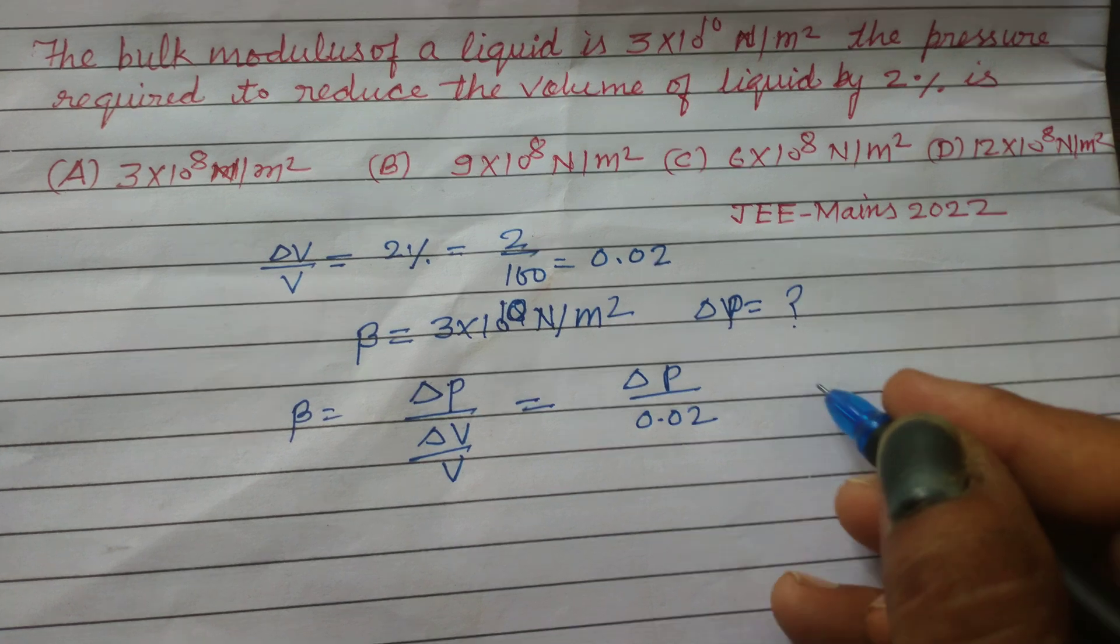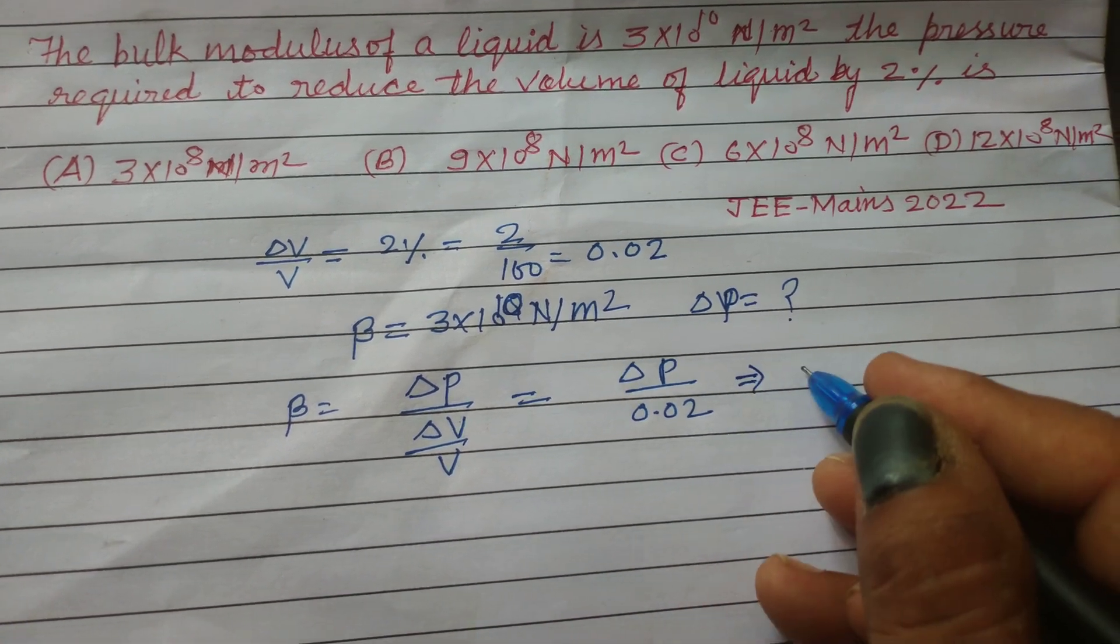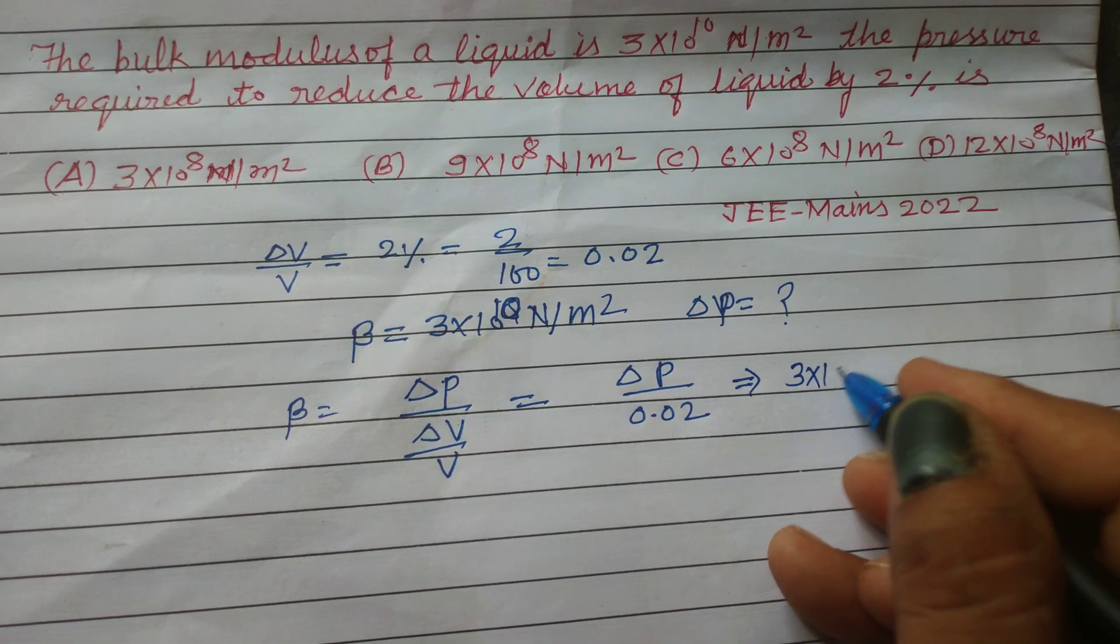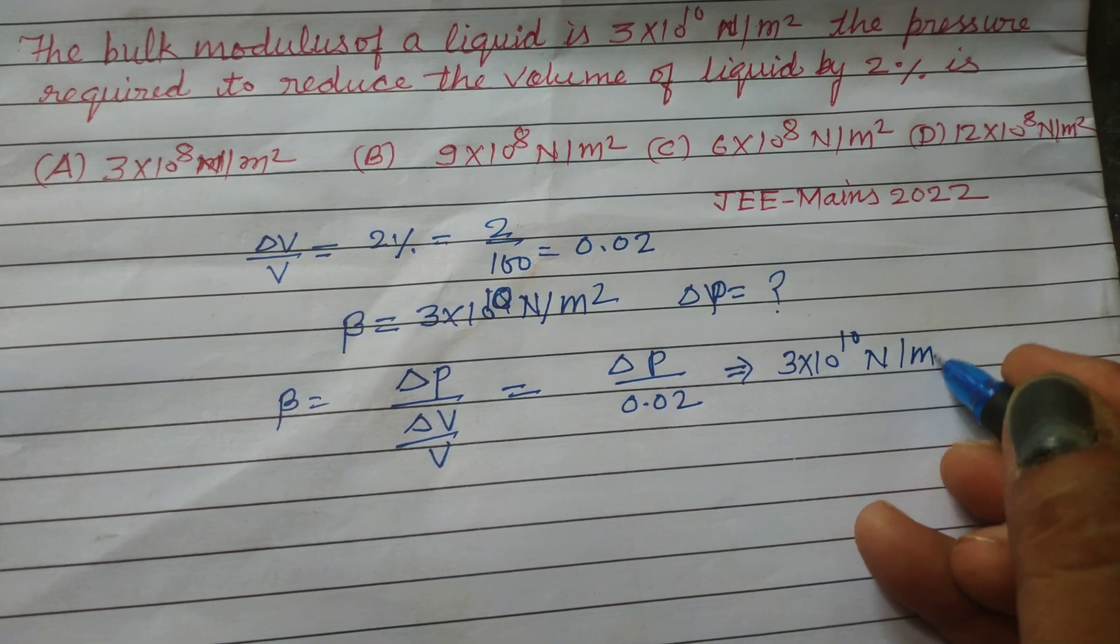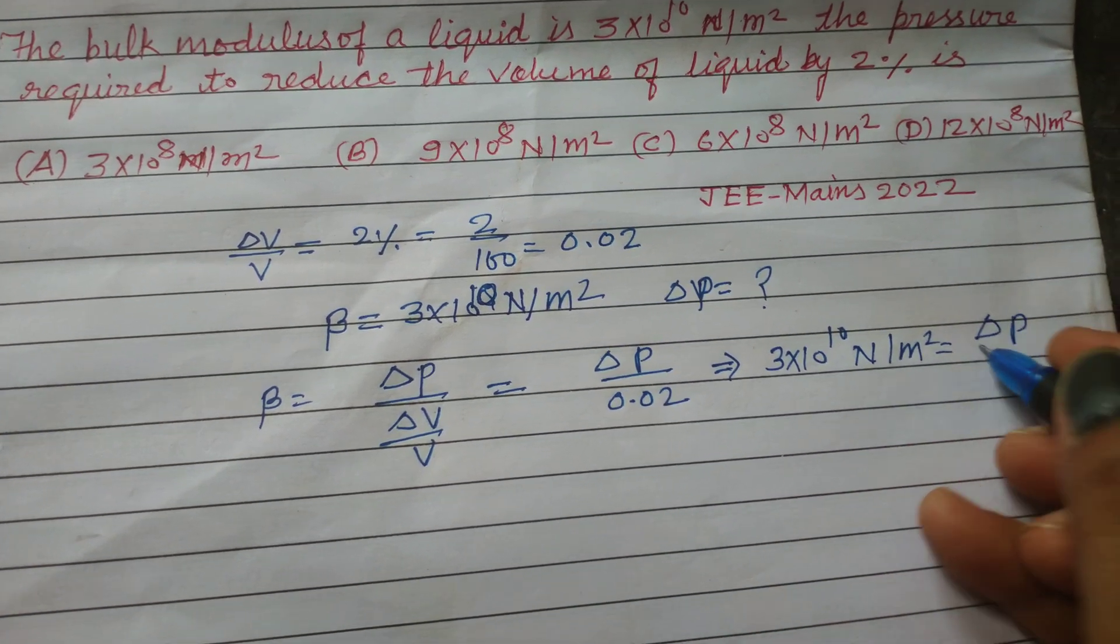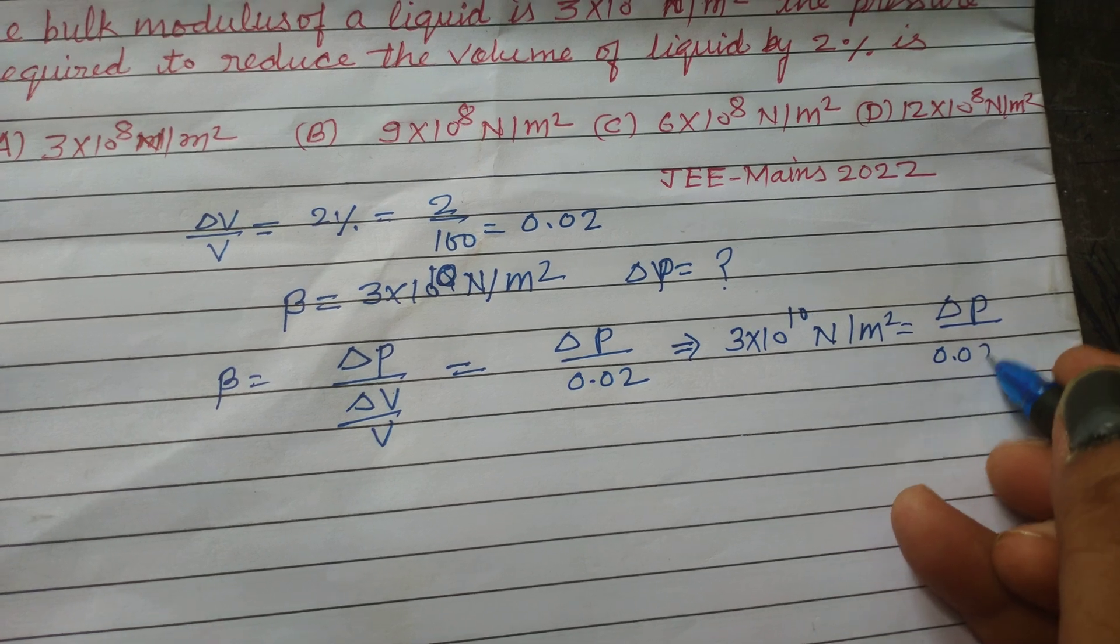Now put the value of β here, which is 3 × 10^10 N/m² equals ΔP divided by 0.02.